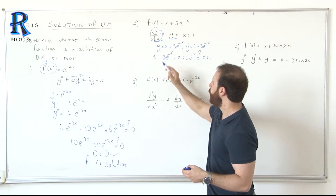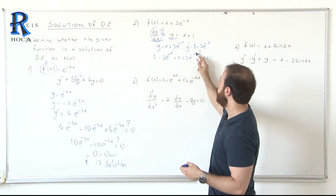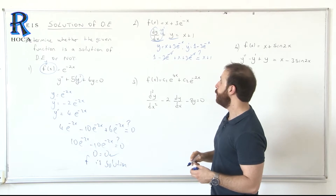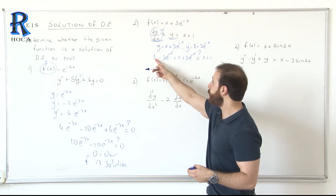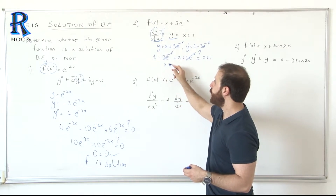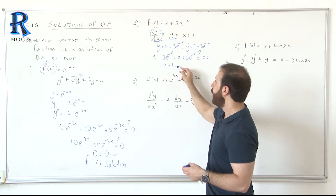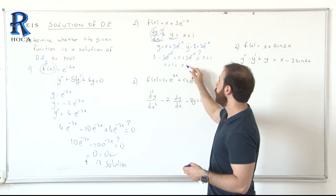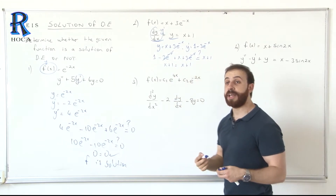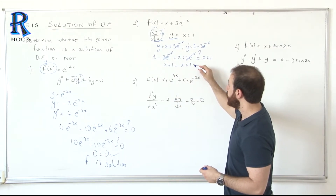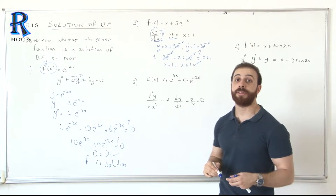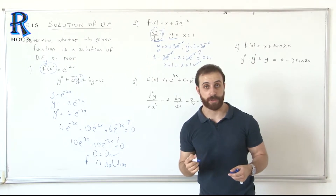The minus 3e^(-x) and plus 3e^(-x) cancel out. We are left with 1 plus x, which is x plus 1. The right side is x plus 1, and the left side equals x plus 1 — so this is a solution.